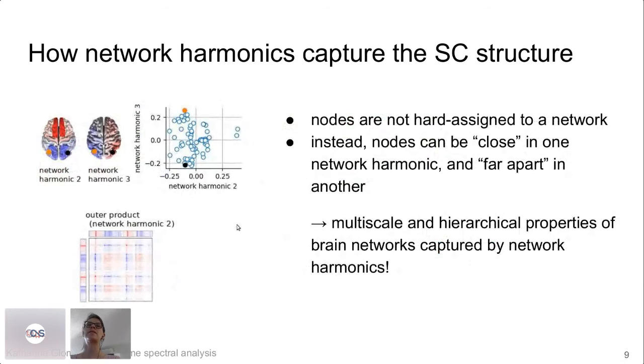Something else that I want to mention is that it's not only multi-scale, but what's also an interesting feature of these network harmonics that we get for free is that we have this integration and segregation. We've already heard a lot about that. And we can clearly see how the same pairs of brain regions can be integrated in one dimension, but they're largely segregated on another axis. So this is how these eigenvectors capture the multiscale and hierarchical properties of brain networks.